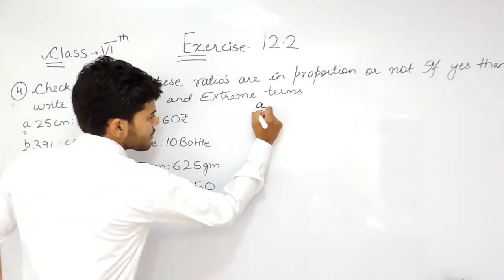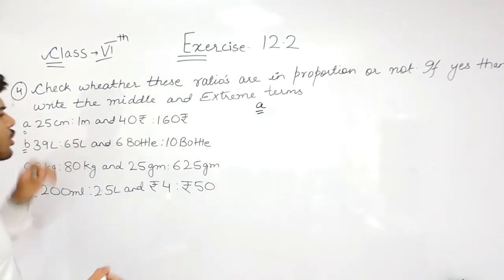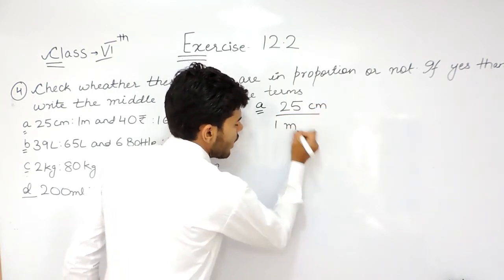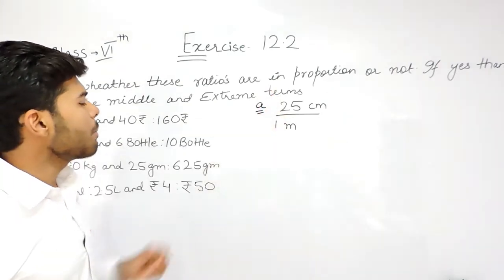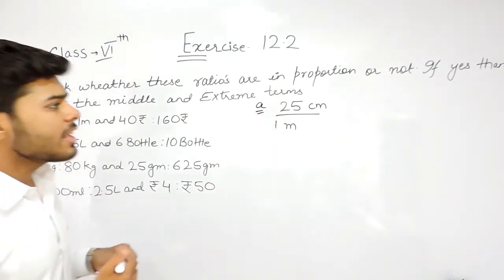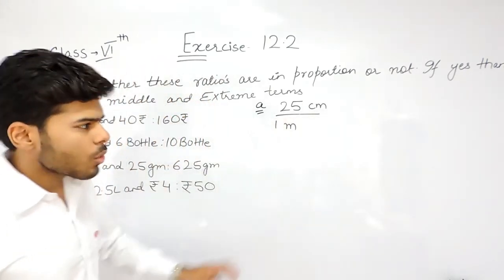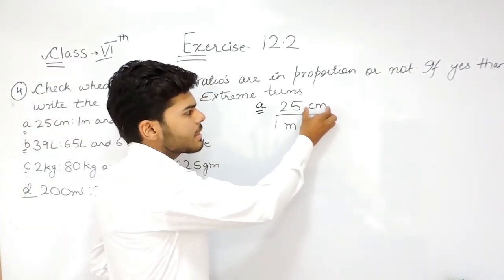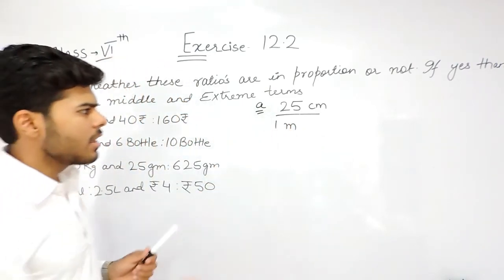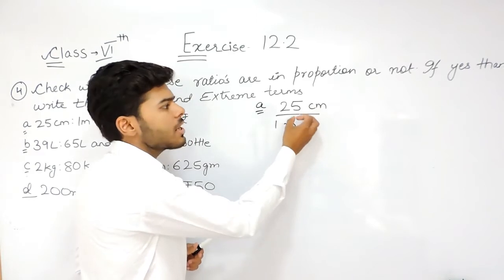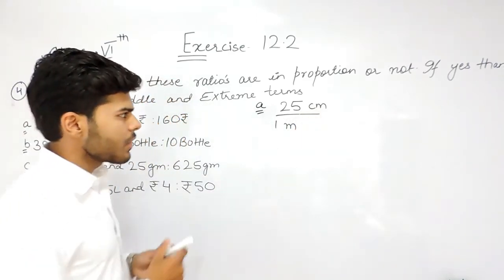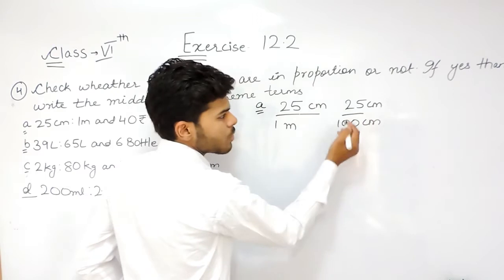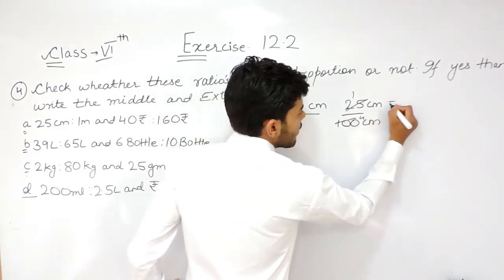First of all, part A. It says 25 cm ratio 1 meter. In order to compare the ratios, they should have the same units. These two are not having similar units, so we will change this meter into centimeter. To convert meter into centimeter is much easier, so we write this as 25 centimeter upon 100 centimeter, since 1 meter equals 100 centimeter. The ratio comes out to be 1 ratio 4.